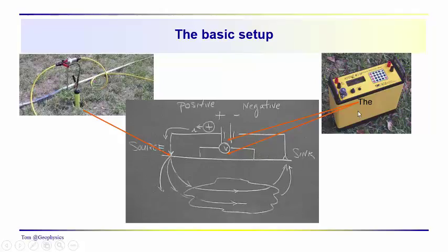This is a modern day resistivity meter — the AGI Sting Swift resistivity meter. Instead of just having four electrodes, two potential electrodes and a source and a sink electrode, we can have 30, 40, or 60 electrodes stuck in the ground all at once, and we can measure potential differences between more or less all possible combinations.